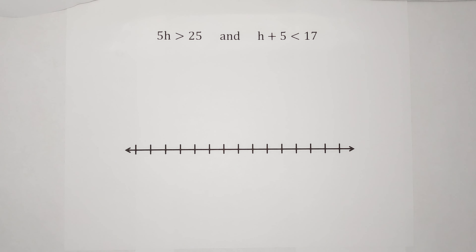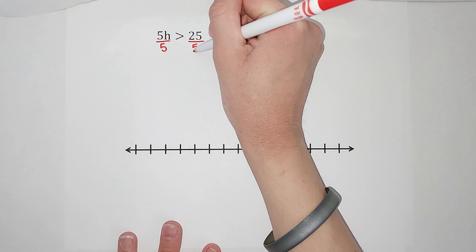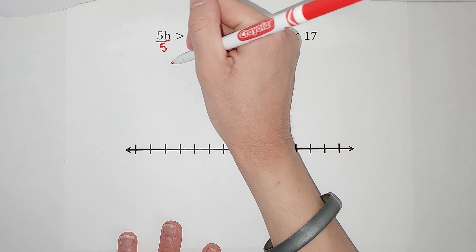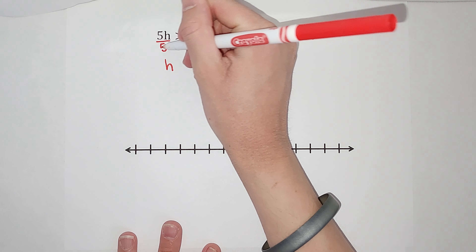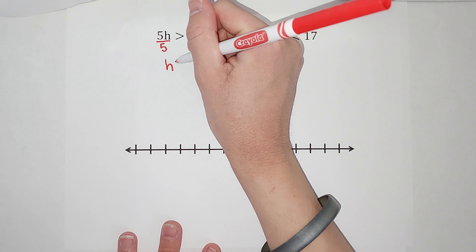So we have 5h is greater than 25. I want my h alone, so to get h alone we're going to divide by 5 on both sides. Remember, if you multiply or divide by a negative you flip the sign, but this one's positive so we don't have to worry about it. So we've got h is greater than 5.